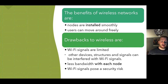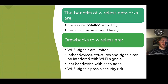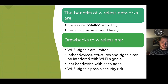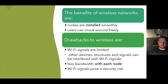The drawbacks of wireless networks are that Wi-Fi signals can be limited in range, usually at most 50 metres. In addition, other devices, structures, and signals can interfere with the Wi-Fi signal. Each wireless access point only has so much bandwidth to share among connected nodes, so the more nodes connected, the less bandwidth each receives and the slower communication becomes. Finally, Wi-Fi signals pose a security risk as unauthorised users can intercept them, though this can be overcome with encrypted messages.